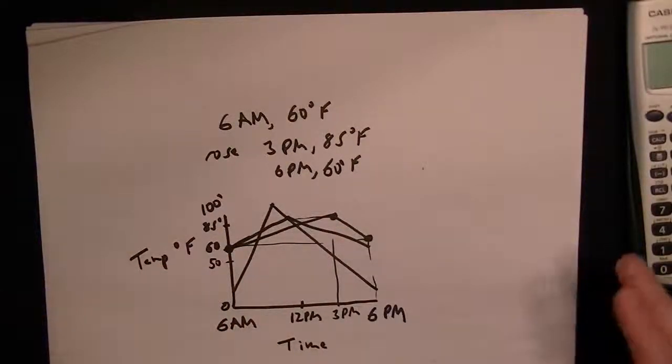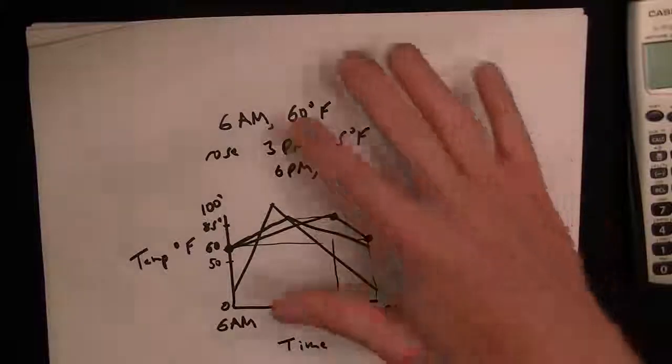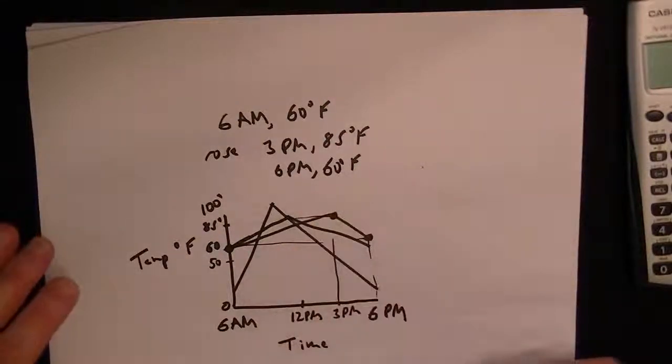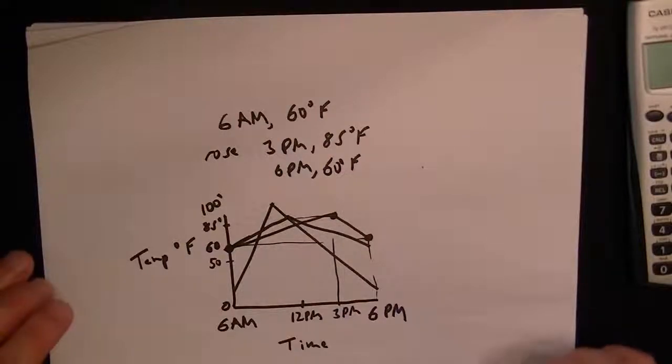So basically you just have to know how to set up a graph and plot it, and then you can read the points and figure out if it matches some of the examples that you might see on the test, and then you just pick the right graph that matches.